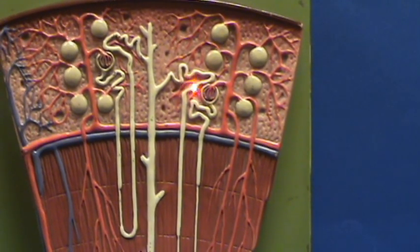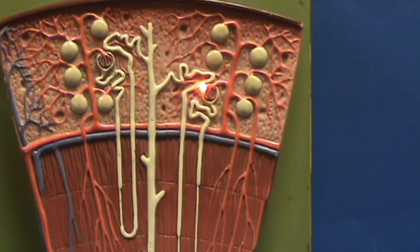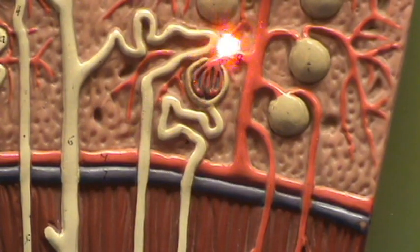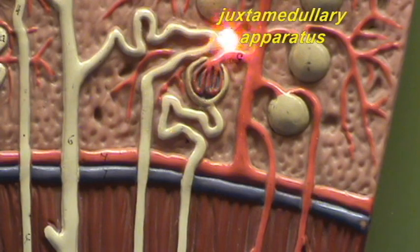It always does the same thing. It comes back to the nephron from where it began. And we're going to see later this is going to form the juxtamedullary apparatus.